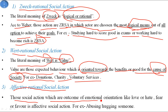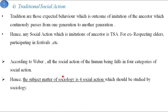The next one is Affective social action. These are social actions which are the outcome of emotional orientations like love, hate, fear, or favor. For example, abusing or hugging someone is an example of affective social action.